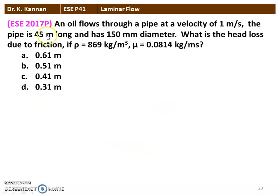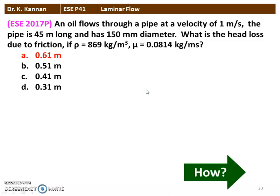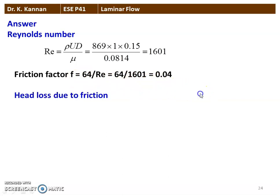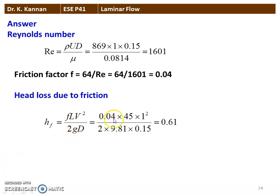The next question from the 2017 question paper: An oil flows through a pipe at a velocity of 1 m/s. The pipe is 45 meters long and has a 150 mm diameter. What is the head loss due to friction if ρ = 869 kg/m³ and μ = 0.0814 kg/m·s? Reynolds number Re = ρUD/μ = 869 × 1 × 0.15 ÷ 0.0814 = 1601. Friction factor f = 64/1601 = 0.04. Head loss HF = fLV²/2gD = 0.04 × 45 × 1² ÷ (2 × 9.81 × 0.15) = 0.61 meters.